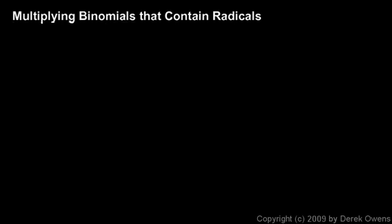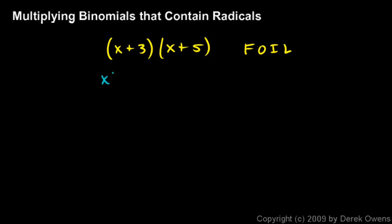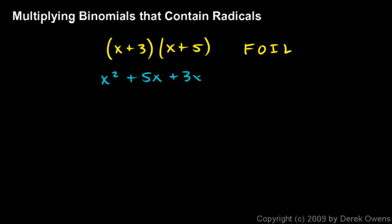Now we'll talk about multiplying binomials that contain radicals. You know how to multiply binomials — remember we did problems like x plus 3 times x plus 5, and the method we used was called the FOIL method. You multiply the first two terms: x times x gives you x squared. The outer two terms gives us 5x, the inner two terms give us 3x, and then the last two terms give us 15. That's what FOIL stands for: first, outer, inner, last.